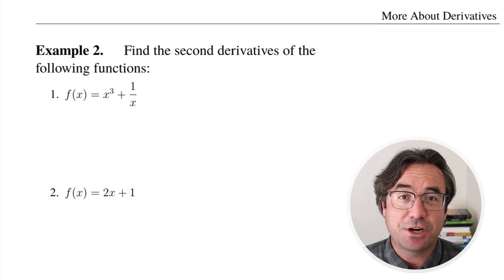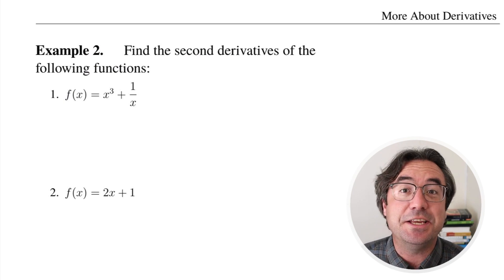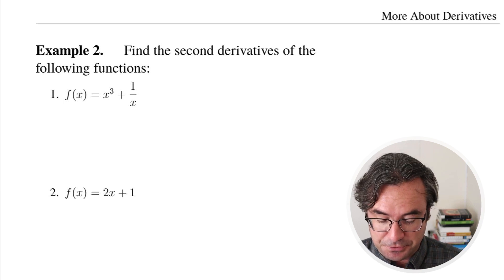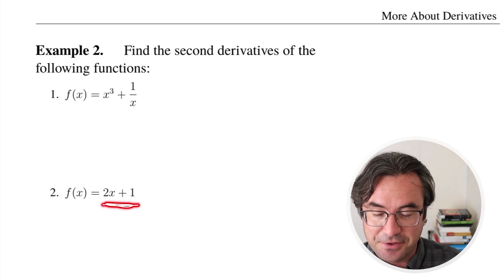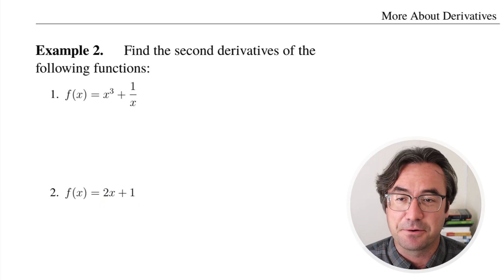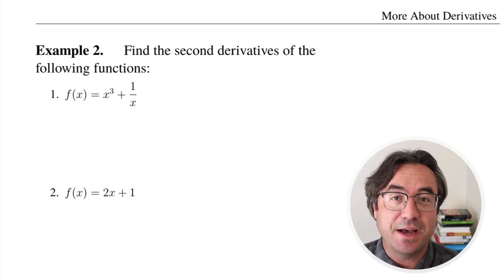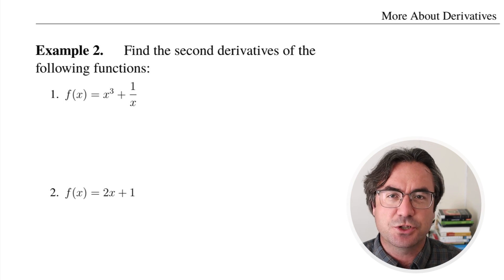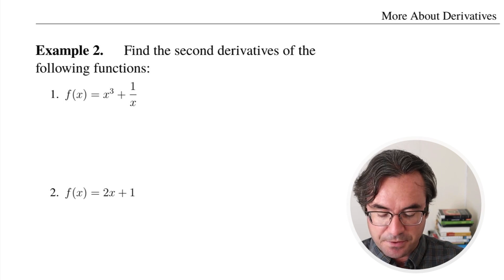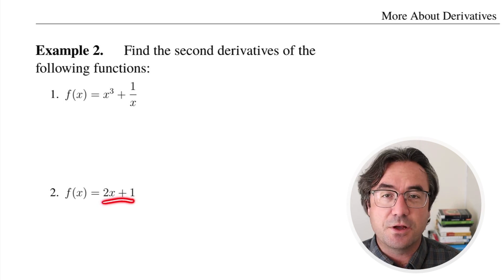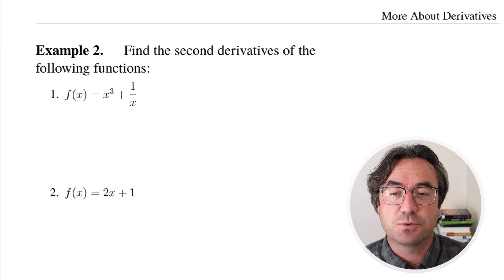Let's actually start with the easier of the two — the second one here. So the function f of x, the original function we're going to start with, has the formula 2x plus 1.